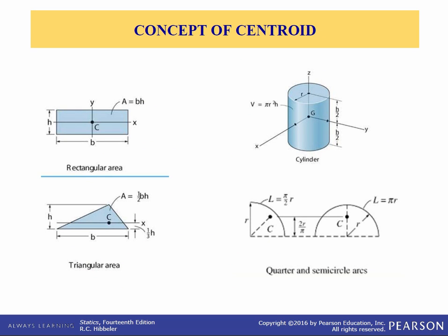The centroid, C, is a point defining the geometric center of an object. The centroid coincides with the center of mass or the center of gravity only if the material of the body is homogeneous — meaning the density or specific weight is constant throughout the body. If an object has an axis of symmetry, as you see here, the centroid of the object lies on that axis. Note that in some cases the centroid may not be located on the object. Inside the back cover of the book there are equations for the centroid of a number of different types of shapes.